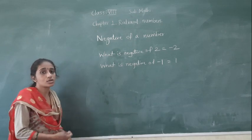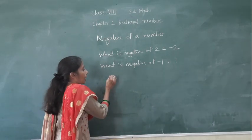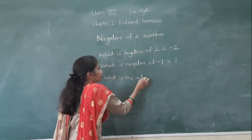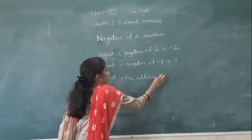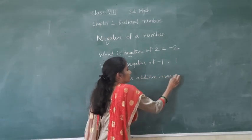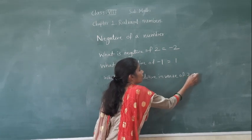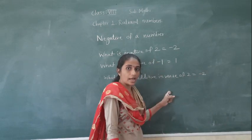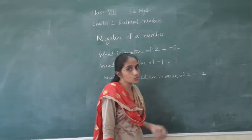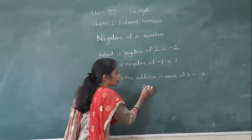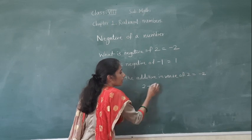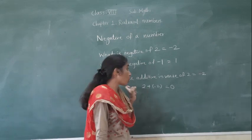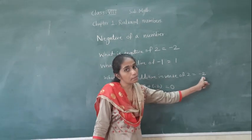What is the additive inverse of 2? The additive inverse of 2 is minus 2. When we add both numbers, 2 and minus 2, what we get is 0. So the additive inverse of 2 is minus 2.